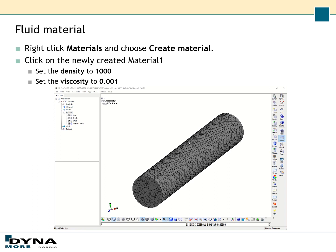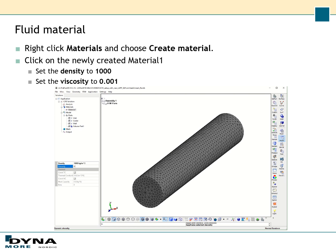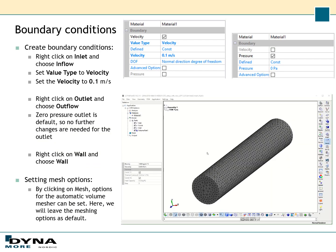The next step is to define the material properties for the fluid. Right-click on Materials and choose Create Material. Click on the material just created, and we can set the density and viscosity. Since we are considering water, we set the density to 1000 and the viscosity to 0.001. Now we also need to create boundary conditions.